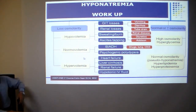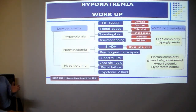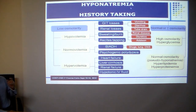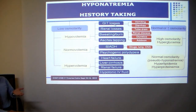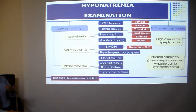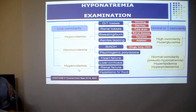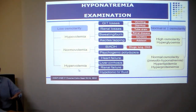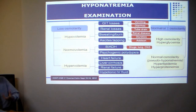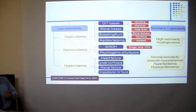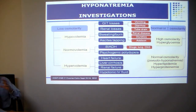In the workup for hyponatremia, history taking is important — you might discover GIT losses, renal disease, or liver disease. Examination is very important because you need to differentiate between hypovolemia and hypervolemia, as the treatment is completely different. Look for orthostatic hypotension and skin turgor.